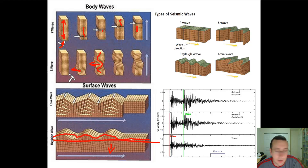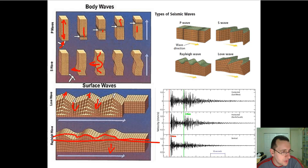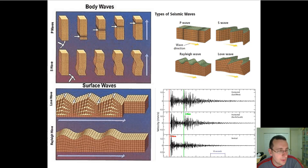Love waves are even more destructive, and you see how they're actually kind of like shear stress. Both of them are a combination of P waves and S waves, but the surface waves of the Love waves are kind of like going side to side and rolling at the same time. That's what creates this pattern of motion that's very, very destructive. In fact, the surface waves are way more destructive than the body waves.